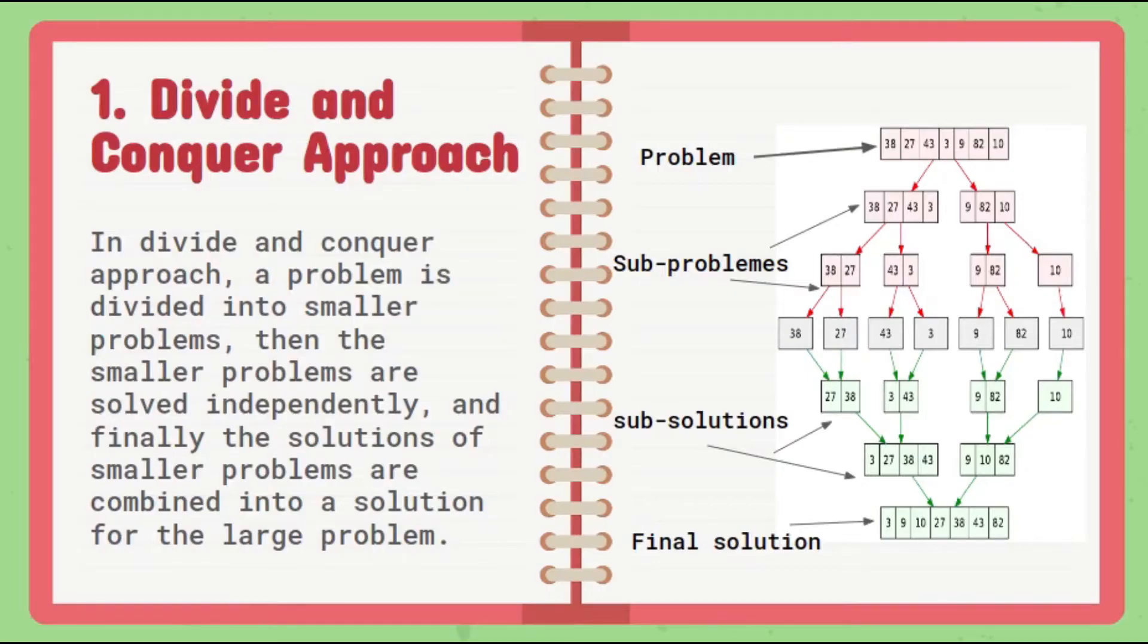The first one is the divide and conquer approach. It is a top-down approach. The algorithms which follow the divide and conquer technique involve three steps. First, divide the original problem into a set of subproblems. We have a big problem, then we subdivide that big problem into subproblems. Secondly, solve every subproblem individually and recursively.